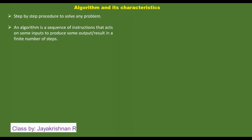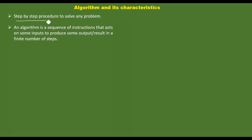What is an algorithm? Generally, we define algorithm as a step-by-step procedure to solve any problem. That is the solution we have to understand. We follow the rules, a set of instructions.